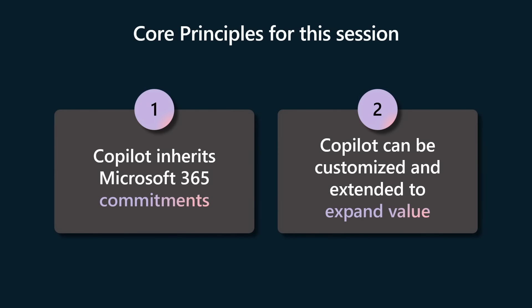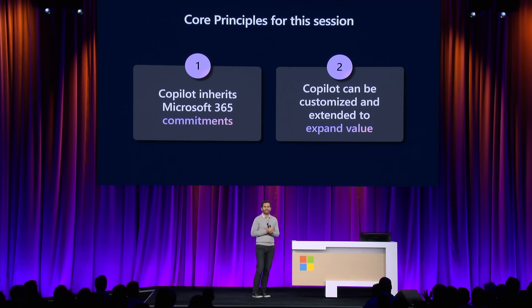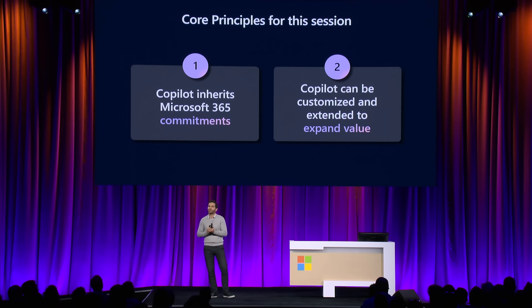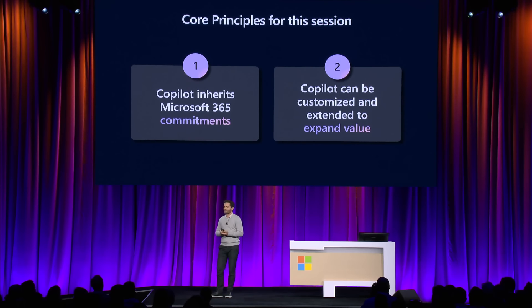Two grounding principles we'll talk about today. The first is that Copilot inherits the Microsoft 365 commitments. We built Copilot on a platform of security — it was not an afterthought. A big part of that is that we borrowed and leveraged the existing infrastructure and architecture of Microsoft 365. The second principle is that Copilot can be customized and extended to expand value. It is not a prerequisite for value, but a way to expand value. By connecting to different services in your ecosystem, you get more out of Copilot — from low-code to pro-code, extensions, plugins, and more. And Ben will be talking a lot about that. So without further ado, I'm going to have Mary come up to talk through some of the Copilot orchestration.